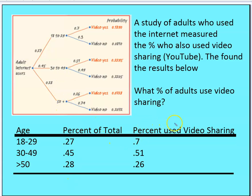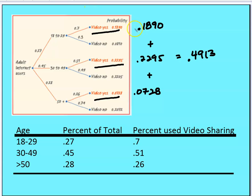Of those age groups, what percent use video sharing? 70% of the 18-to-29 population use something like YouTube, 30% did not. 51% of the 30-to-49 group used video sharing, 49% did not. 26% of those 50 and older used video sharing, and 74% did not. The question is: what percent of adults use video sharing? We total all the 'yes' branches of the tree diagram and arrive at a value of 0.4913.